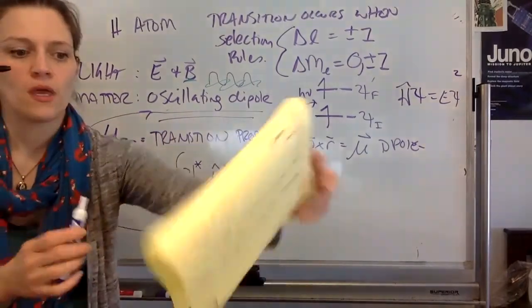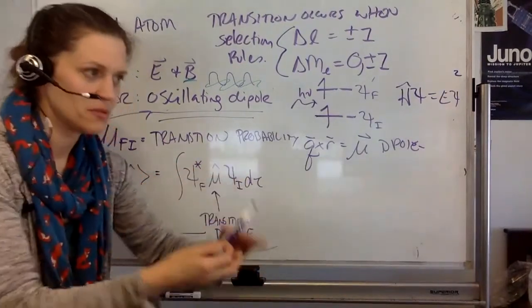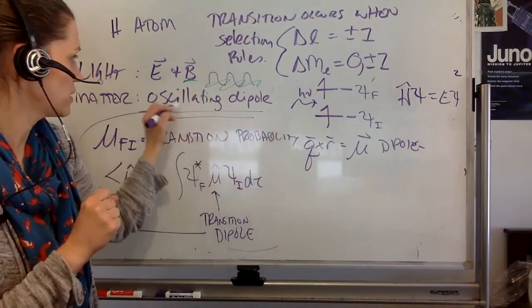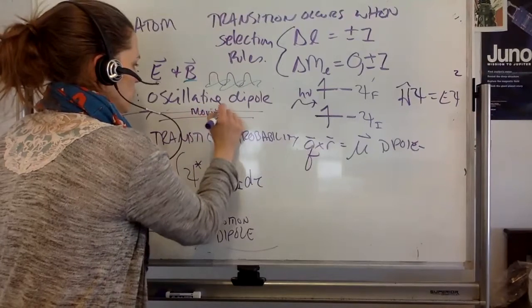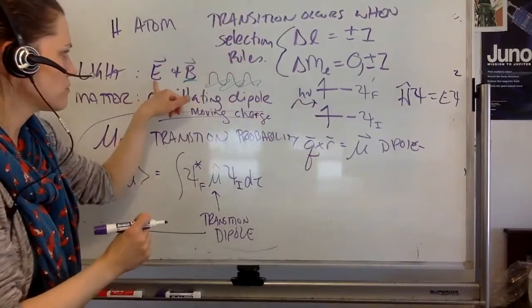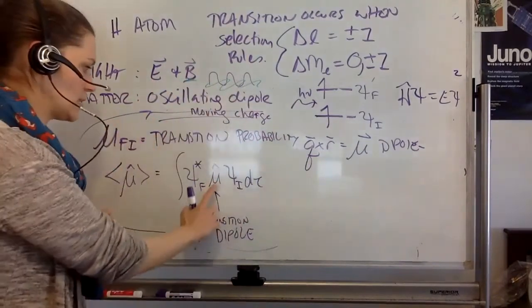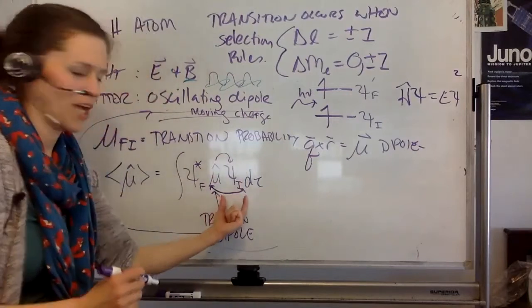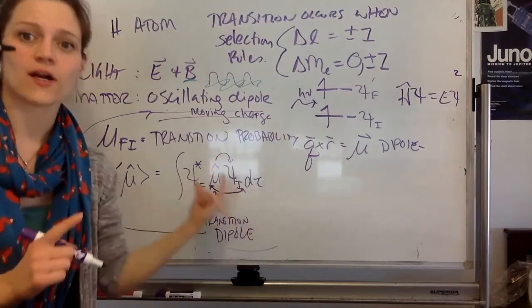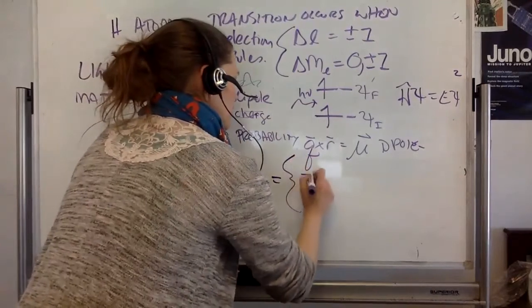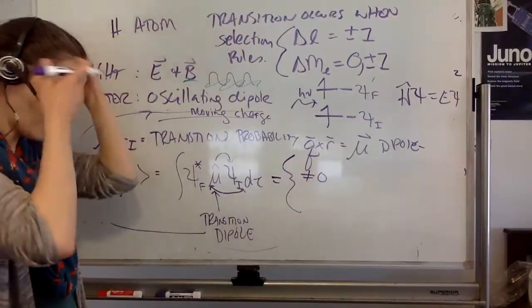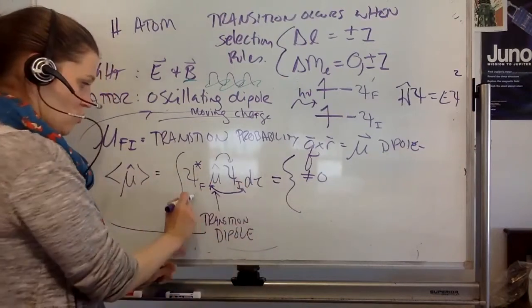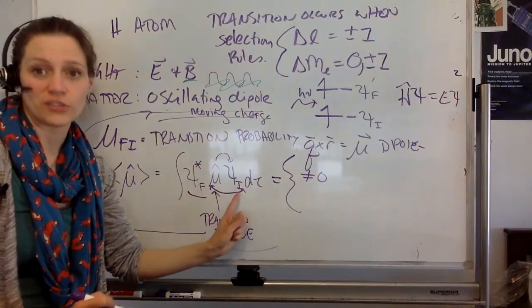There's a moment in time in which that oscillating dipole is going to overlap its frequency of oscillation of its electric field — because a moving charge creates an alternating electric field. If that oscillation matches this oscillation of the transition dipole moment, you have the transition dipole moment operating on this wave function. Then if there is a non-zero expectation value — if this doesn't equal zero — that means there is non-orthogonal overlap between psi final and psi initial being operated on with the transition dipole moment.